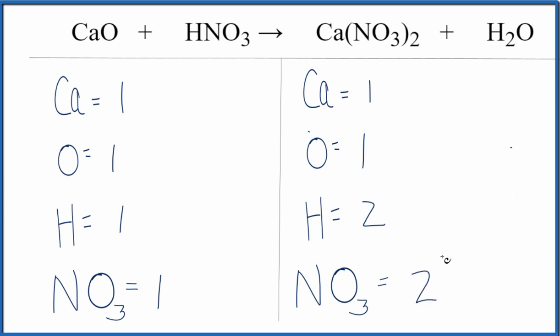Now this will make it a lot easier to balance. If we look at our coefficients, we're not balanced here. We have two hydrogens, one here, two nitrate ions, only one here. So all we really need to do is put a coefficient of two in front of the nitric acid.